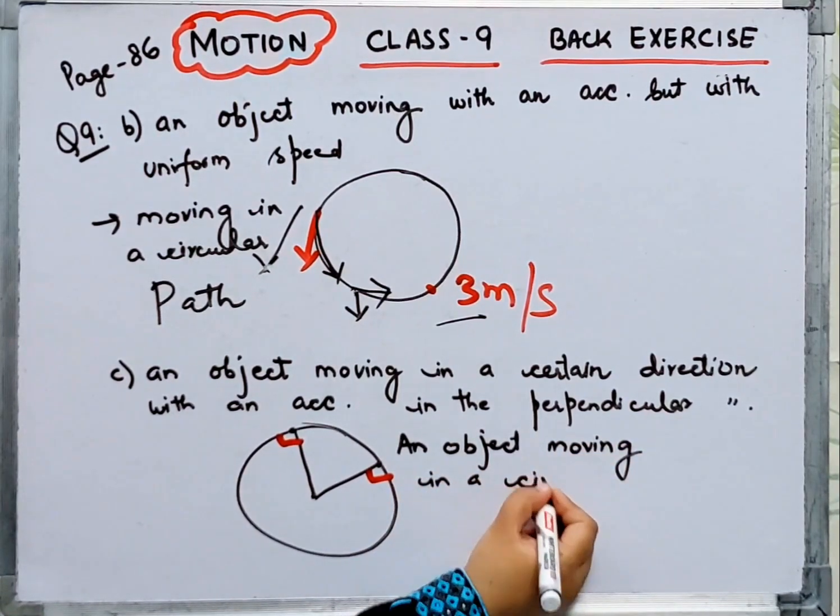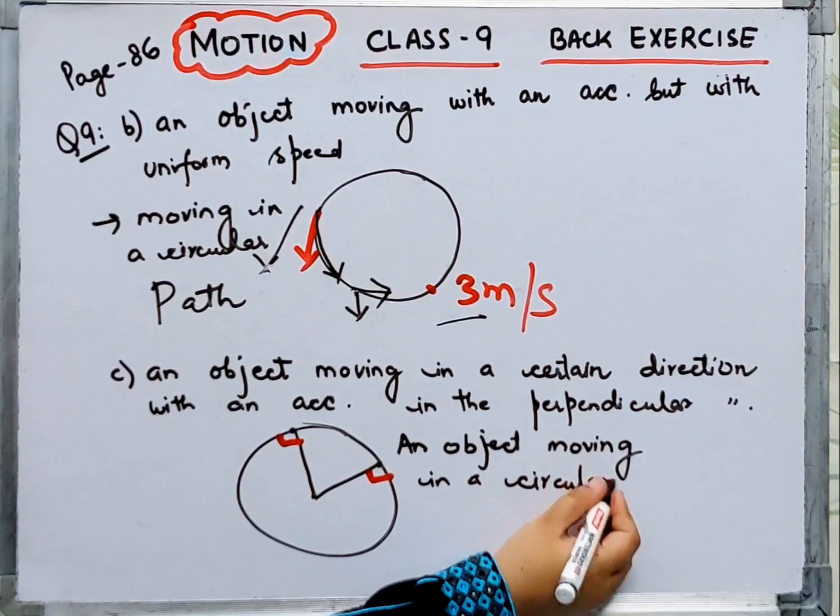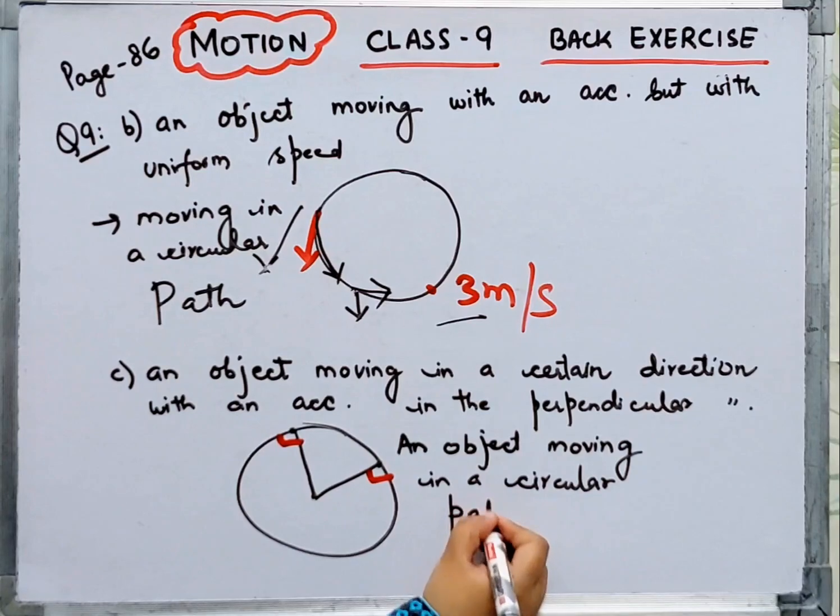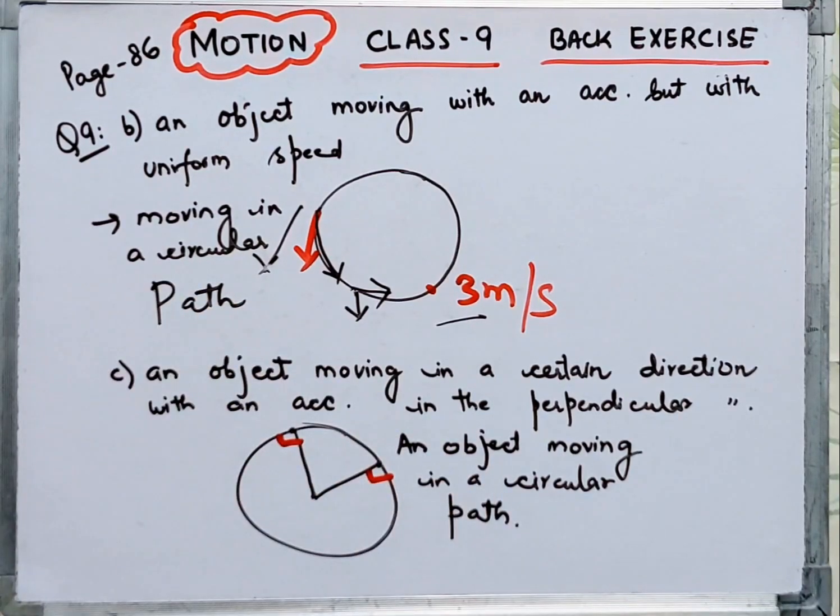So what happens in the circular path? Its acceleration is perpendicular. Now the circular path, same, here is the answer. Now question number 10.